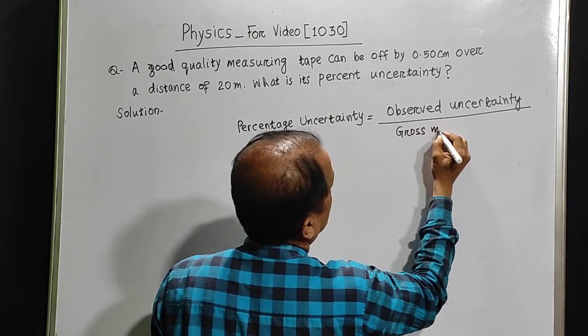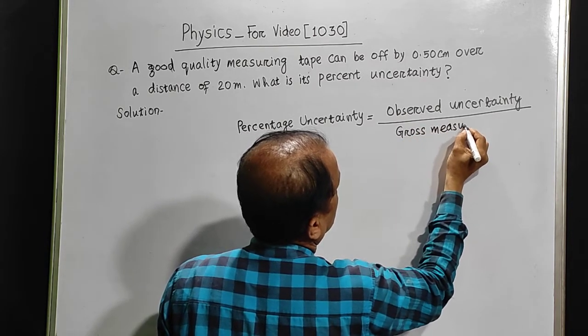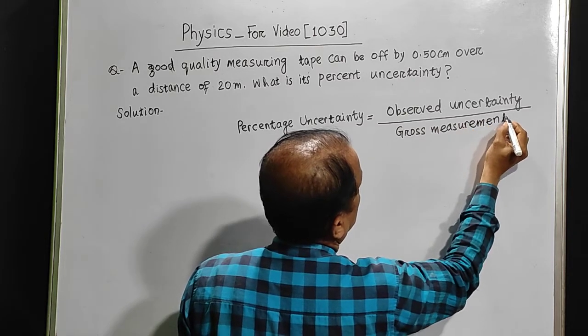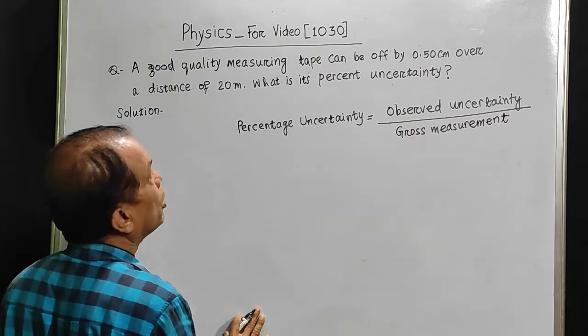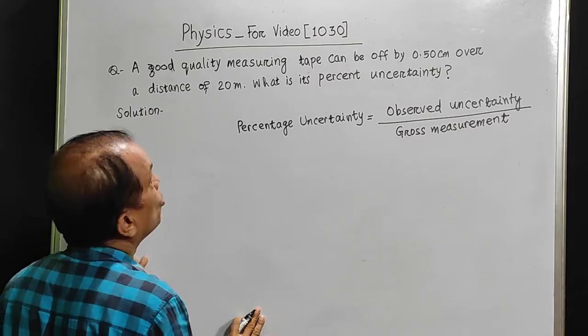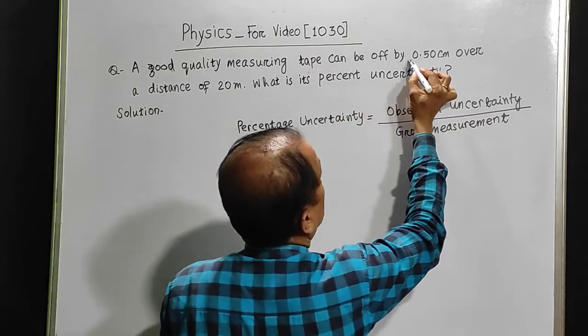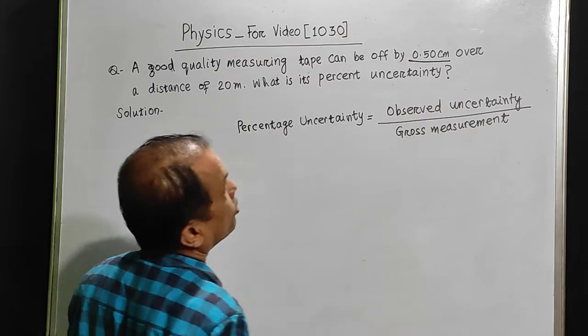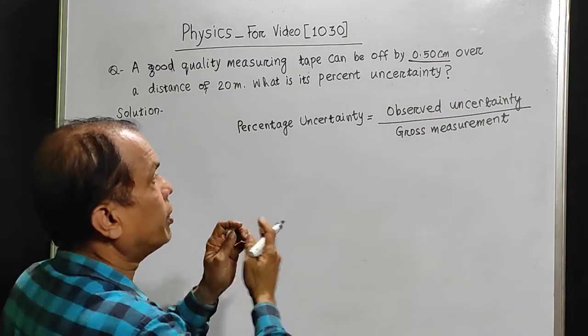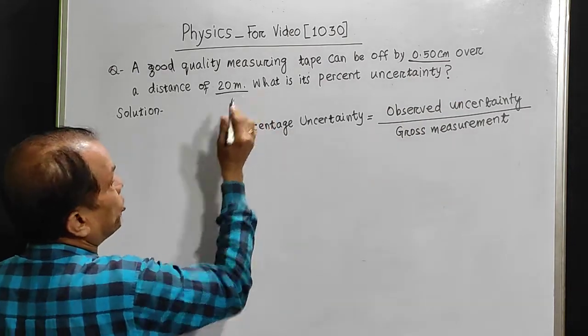What are we giving? We are giving that there is an uncertainty of 0.50 cm while we are measuring a longer distance of 20 meters.